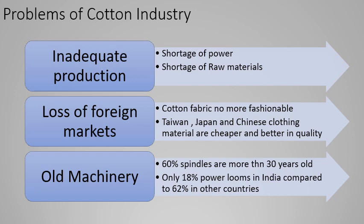Problems in the cotton industry include: inadequate production, shortage of power, shortage of raw materials, and loss of foreign markets — because synthetic fabrics produced in Japan, Taiwan, and China are now more common in fashion. Old machinery is also a problem: 60% of spindles are more than 30 years old. India needs more power looms, as handloom production takes far more time than power loom production.